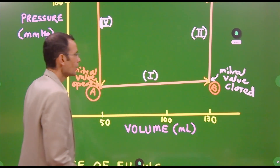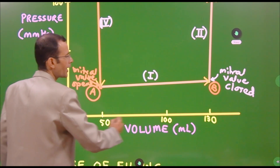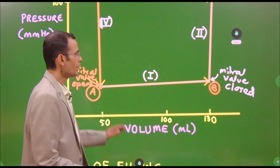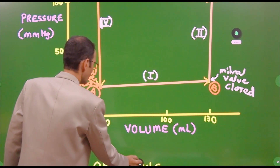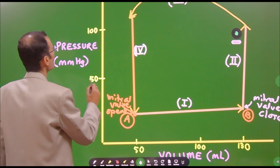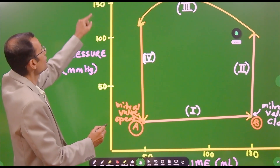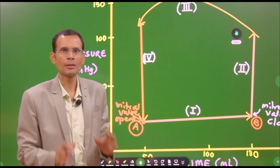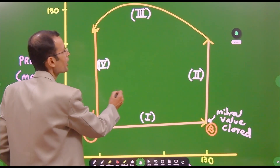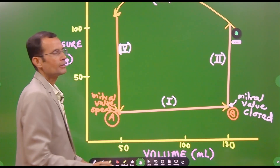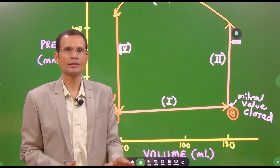Let us discuss the graph. On the horizontal axis is left ventricular volume: 50 ml, 100 ml, 130 ml. On the vertical axis is left ventricular pressure: 50 mmHg, 100 mmHg, 130 mmHg. To keep it simple, we have taken these figures — 50, 100, 130 on both axes. We will show four phases during a cardiac cycle.